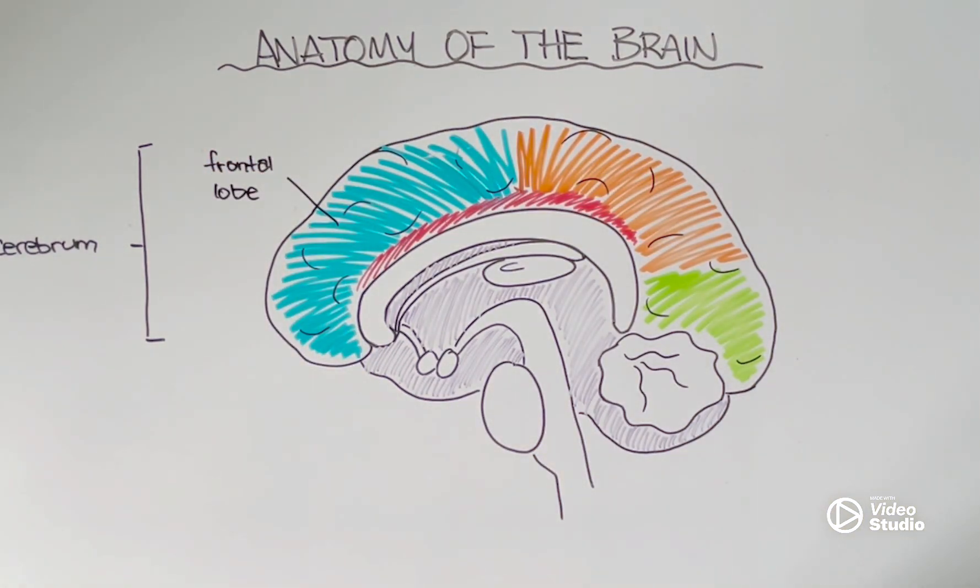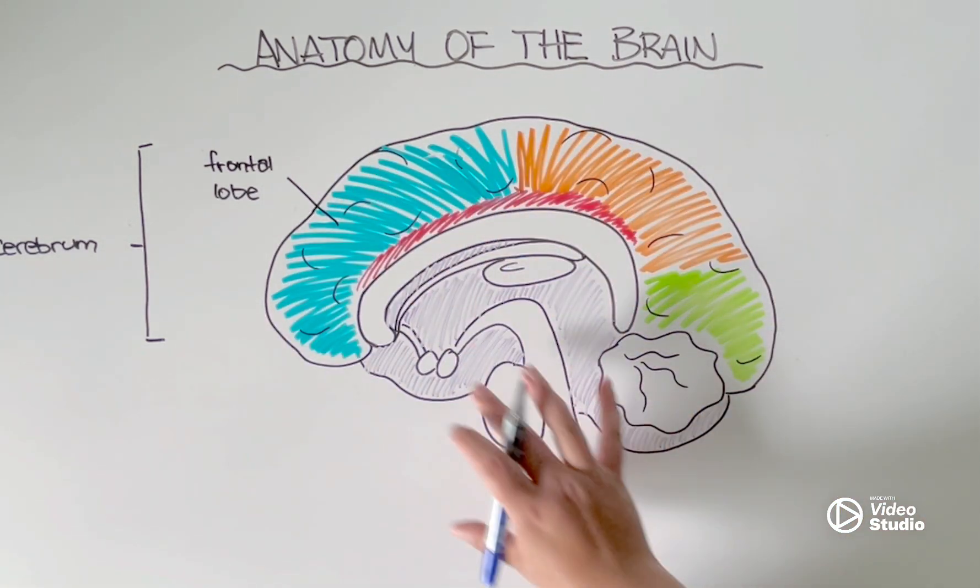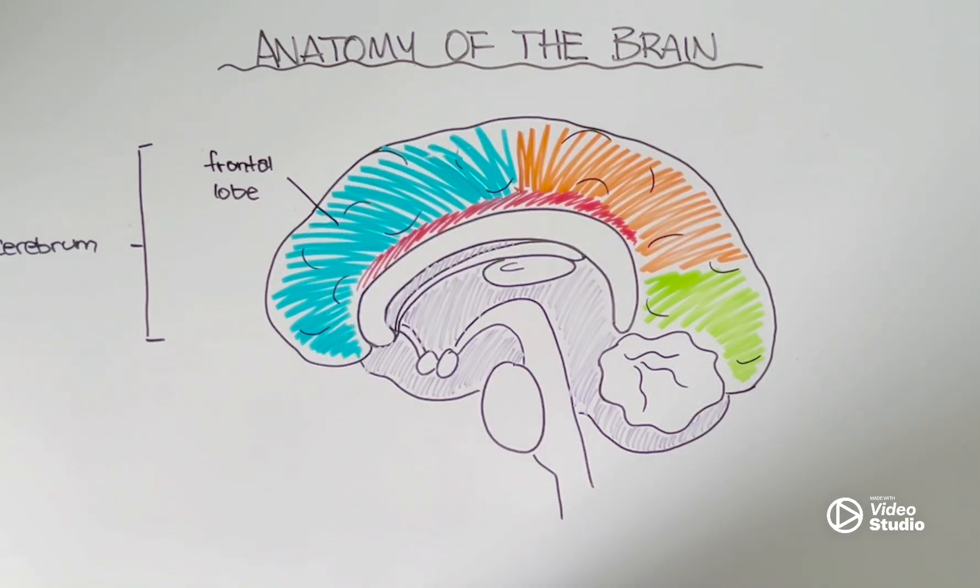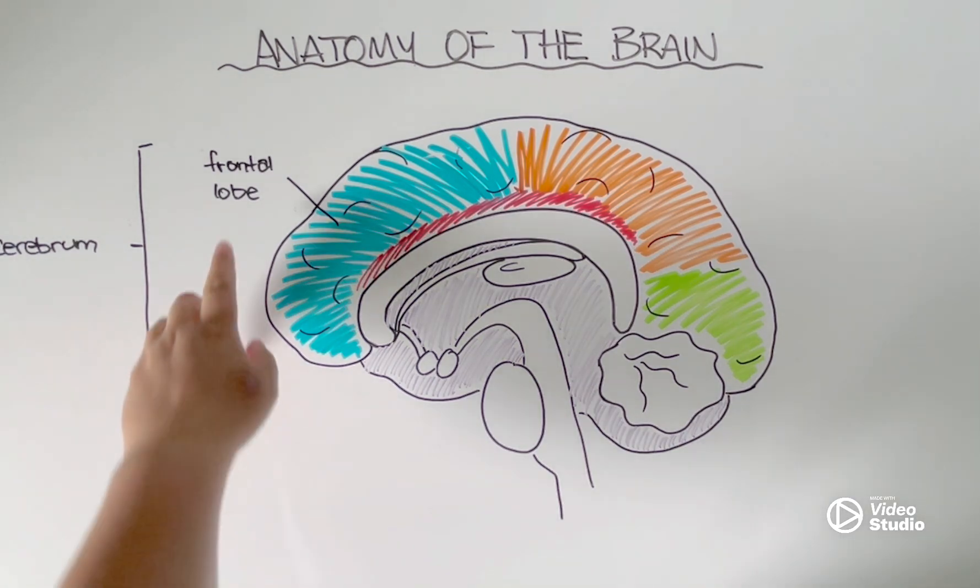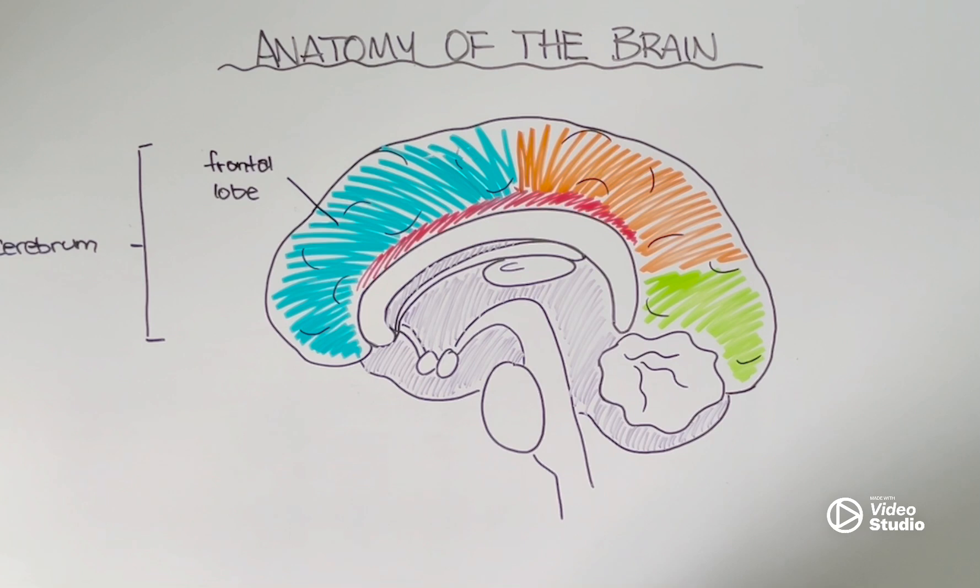Now, the frontal lobe is kind of what sets us apart from other species. When we compare the size of our frontal lobe to the rest of the structures in the brain, ours is considerably bigger than some of the other species, other than maybe cetaceans like dolphins and orca whales. So, it makes sense that the frontal lobe is responsible for so many of the complex functions that make us unique, such as problem-solving, memory, language production, and the ability to understand consequences. Maybe not so surprising, this is also one of the regions of the brain that finishes developing last.